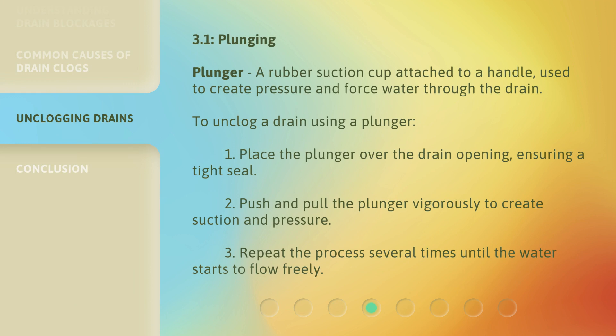Plunging. Plunger: a rubber suction cup attached to a handle, used to create pressure and force water through the drain. To unclog a drain using a plunger: 1. Place the plunger over the drain opening, ensuring a tight seal. 2. Push and pull the plunger vigorously to create suction and pressure. 3. Repeat the process several times until the water starts to flow freely.